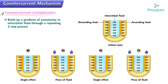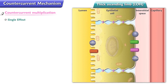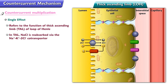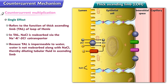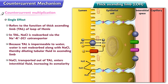Counter-current multiplication builds up a gradient of osmolarity in the interstitial fluid through a repeating two-step process. The first step is called the single effect and the second step is the flow of tubular fluid. The single effect refers to the function of the thick ascending limb of the loop of Henle. In the thick ascending limb, sodium chloride is reabsorbed via the sodium-potassium-2-chloride cotransporter. Because the thick ascending limb is impermeable to water, water is not reabsorbed along with sodium chloride, thereby diluting the tubular fluid in the ascending limb.